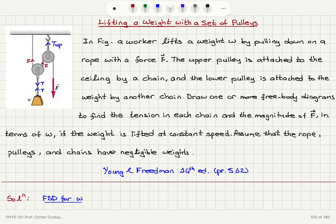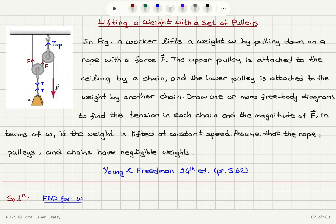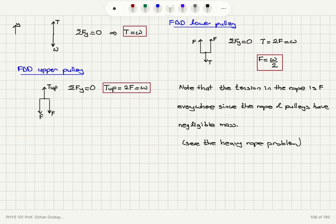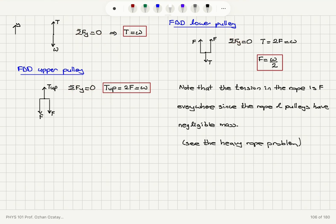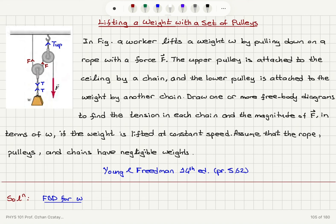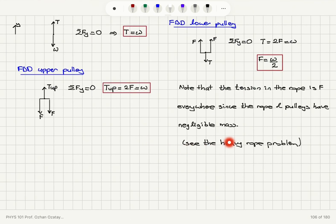...we will have 2F pointing down and the tension in the upper chain pointing up. And therefore, T_up will be equal to 2F which is W. And why am I writing this net force on the y-axis to be zero? Because I have lifting occurring at constant speed. The acceleration is zero. So I have to write this equilibrium condition: net force on the y-axis equals zero.